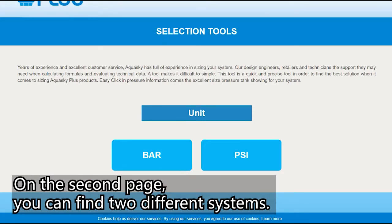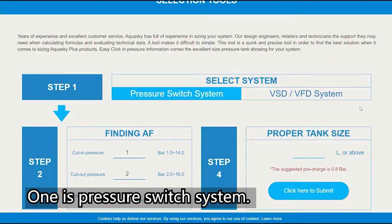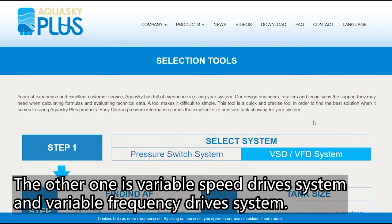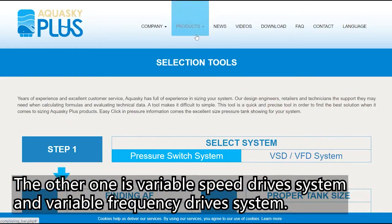On the second page you can find two different systems. One is pressure switch system, the other one is variable speed drive and variable frequency drive system.